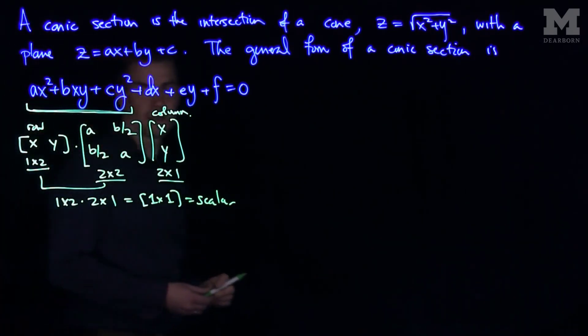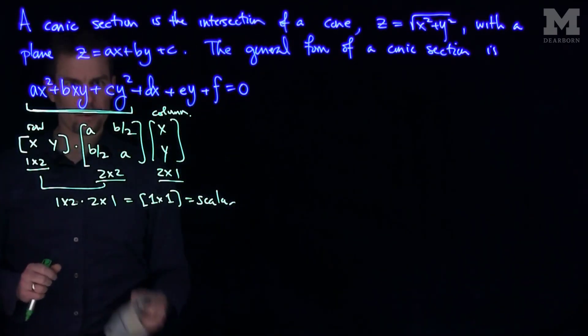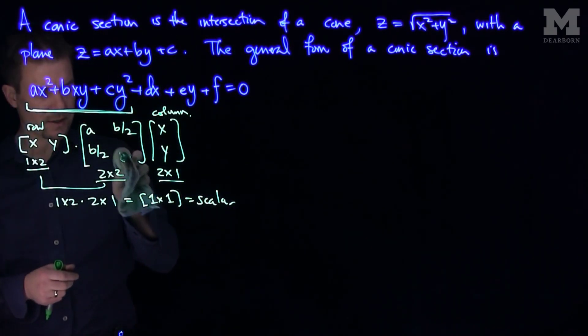Now we can classify the conic section by the eigenvalues of this matrix. And this of course is not an A, this of course is going to be a C over here. That's going to be a C.